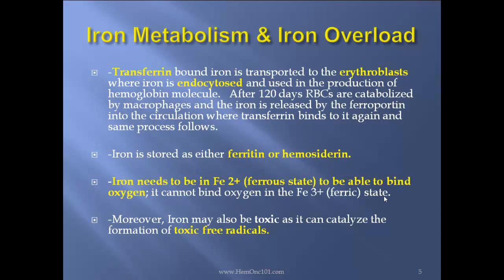Transferrin-bound iron is transported to the erythroblast where iron is endocytosed and used in the production of the hemoglobin molecule. After 120 days, RBCs are catabolized by macrophages and the iron is released by ferroportin into circulation where transferrin binds to it again and the same process follows.